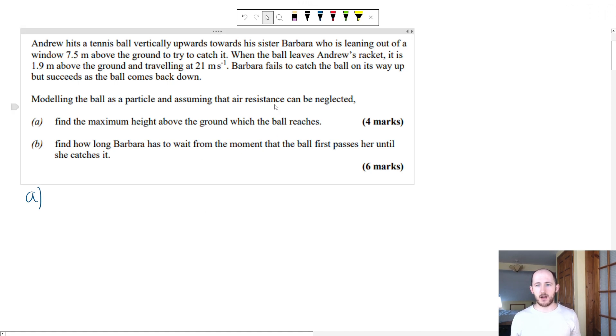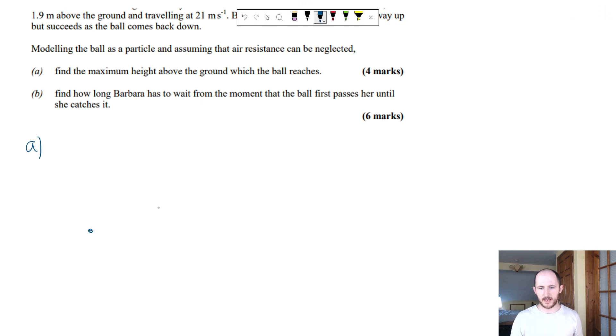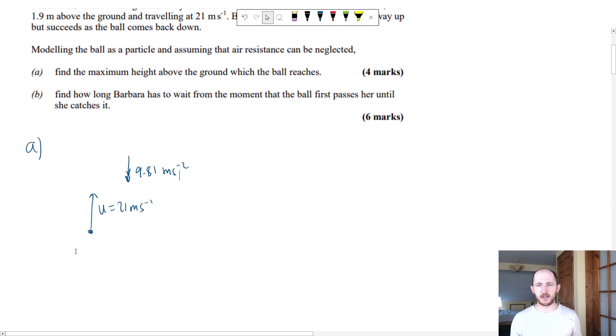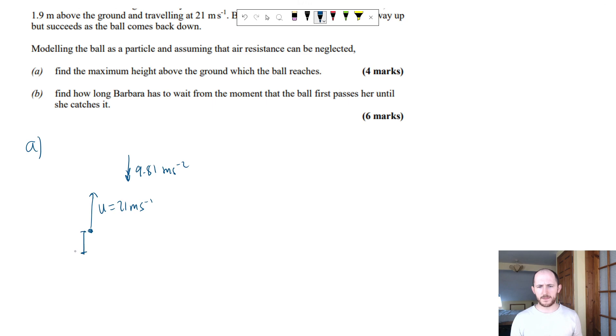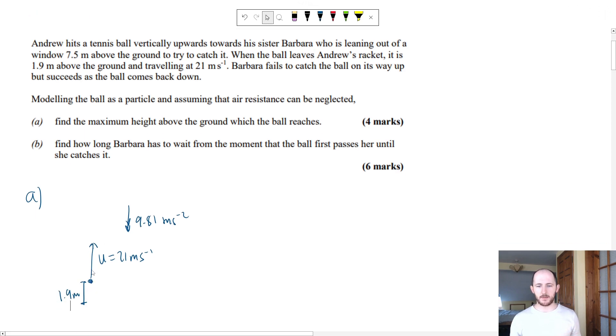The key part with A-level maths, but especially mechanics, is drawing out diagrams. So if you think about the diagram for the first part, I don't actually care about his sister Barbara because we're just looking for the maximum height above the ground which the ball reaches. So we have a ball here, it's being projected upwards and the speed, the initial speed is 21 metres per second. Of course, gravity is going to be acting to try and stop that at 9.81 metres per second squared.